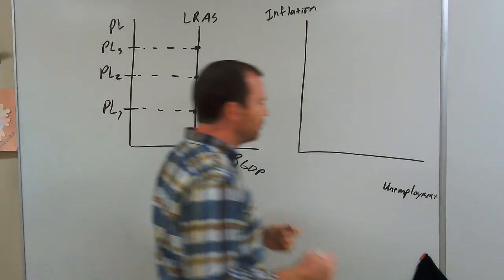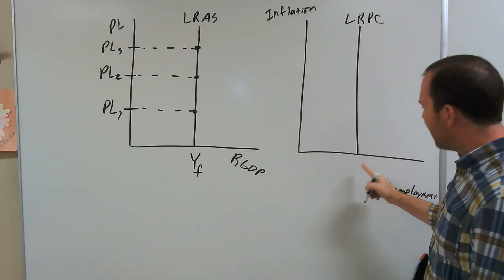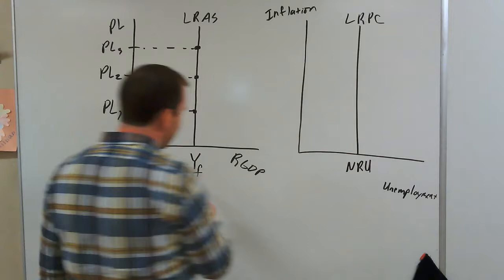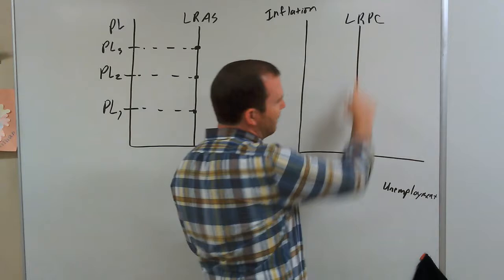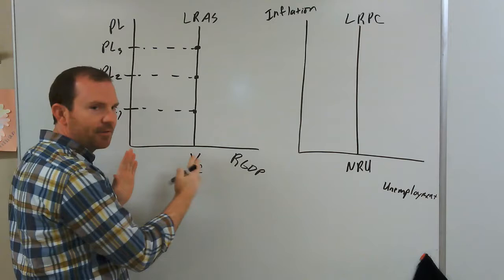So what kind of curve would show that? A curve that would show that would be a straight vertical line. This would be our long-run Phillips curve — it's a vertical line at a particular unemployment rate. What unemployment rate would that be? That would be our natural rate of unemployment. So if we're operating on the long-run aggregate supply curve at full employment output, then we're also operating on the long-run Phillips curve at the natural rate of unemployment. That's why this curve is vertical — inflation and unemployment are no longer linked to each other.